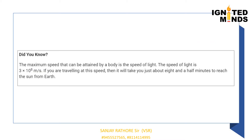Did you know the maximum speed that can be attained by a body is the speed of light? The speed of light is 3 × 10⁸ metre per second. If you are travelling at this speed, it will take you just about 8 and a half minutes to reach the sun from Earth.